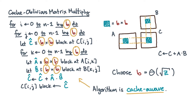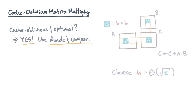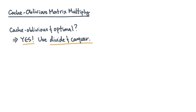Here's a question: is there a different algorithm that does not refer to l or z, yet somehow still attains the lower bound? The answer is yes — it's based on the idea of divide and conquer.